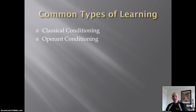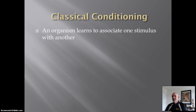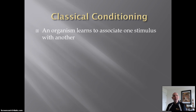Classical Conditioning is what we're going to cover in Part 1 and Part 2, and then Part 3 and 4 will be Operant Conditioning. We define Classical Conditioning as when an organism — that's you and me — learns to associate one stimulus with another.